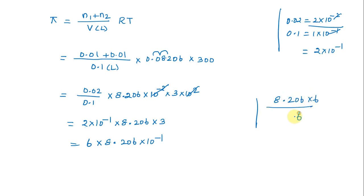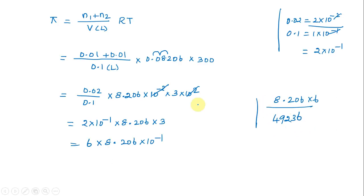Simplifying to 2 times 8.206 times 3. You can see 6 times 8.206 times 10 to power minus 1 equals 49.236.